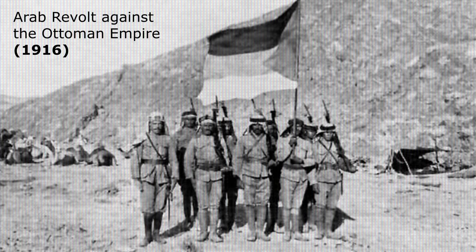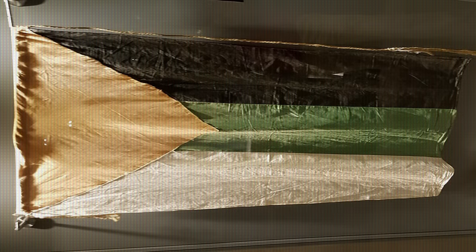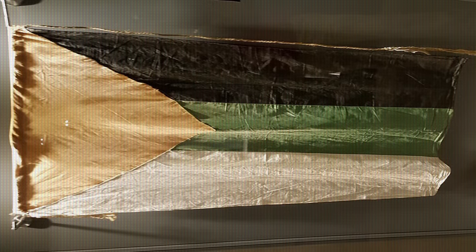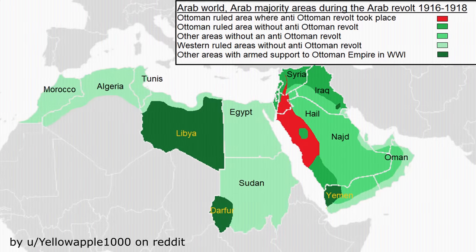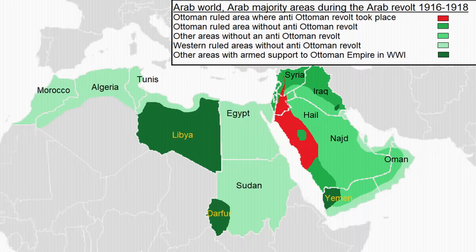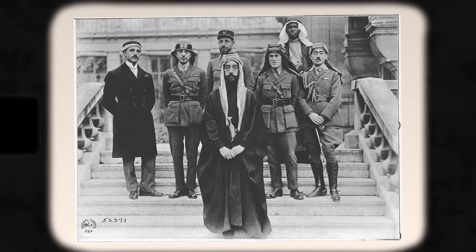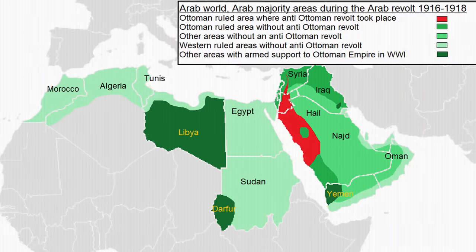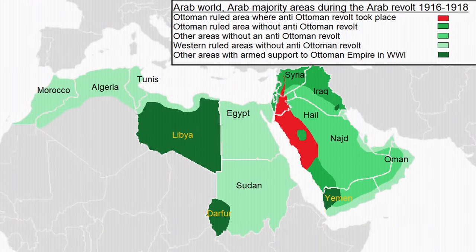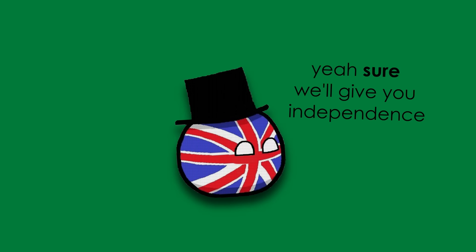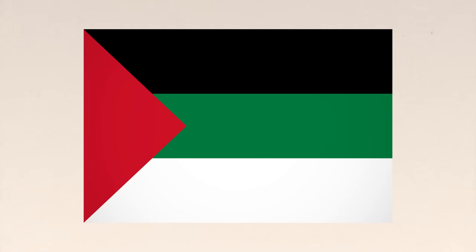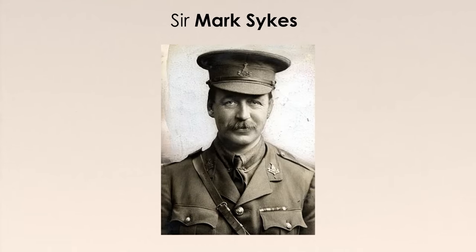These pan-Arab colors, used individually in the past, were first combined in 1916 in the flag of the Arab Revolt, also known as the Flag of Ejaz. This flag was a horizontal tricolor of black, green, and white, with a red triangle on the left side. It is said that the revolt's flag itself was designed by British diplomat Sir Mark Sykes.